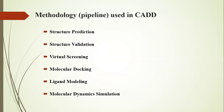Here we have a conventional pipeline that we use for computer drug design, which we can change or adapt according to our experiments and the nature of the experiment. We have structure prediction, structure validation, virtual screening, molecular docking analysis, ligand modeling, and molecular dynamics simulation. The first two steps depend on whether the protein structure is already available.